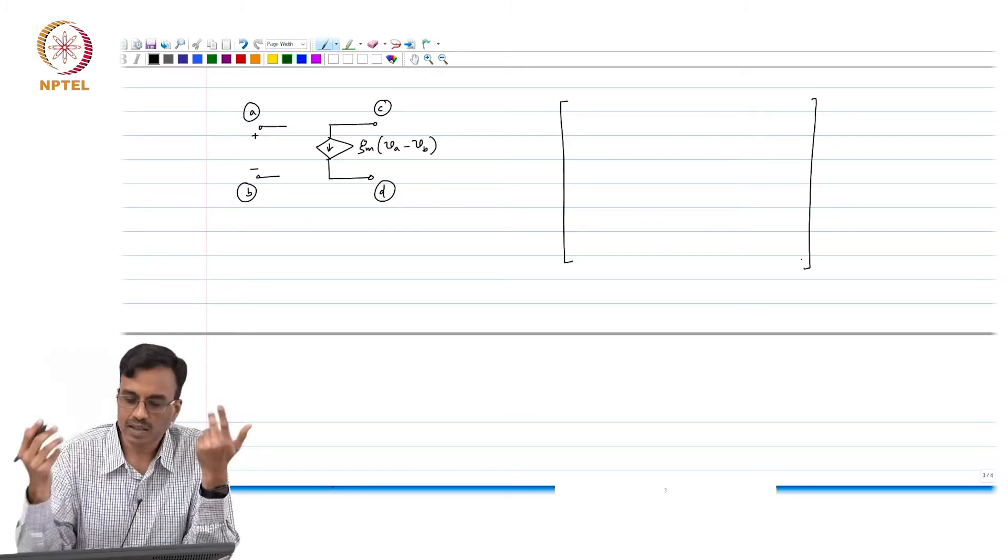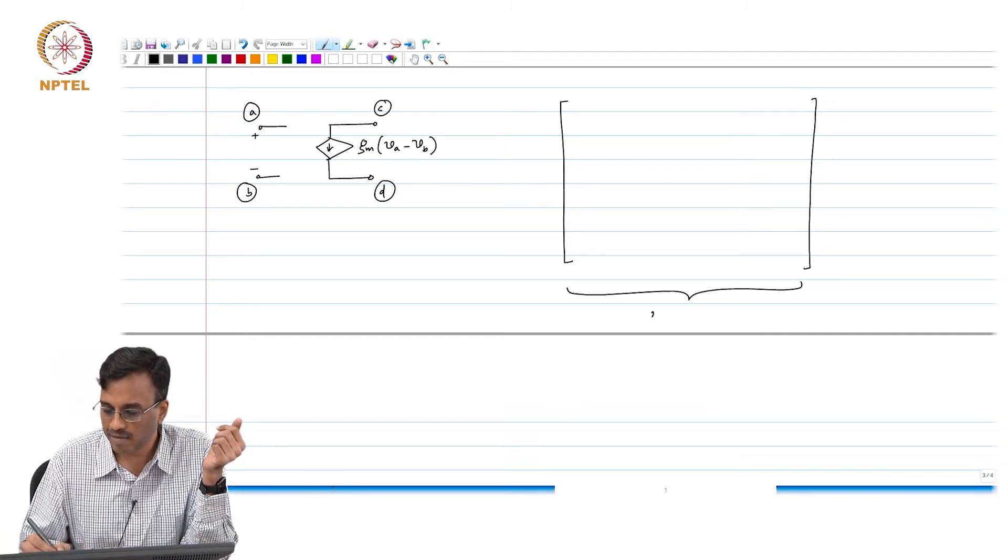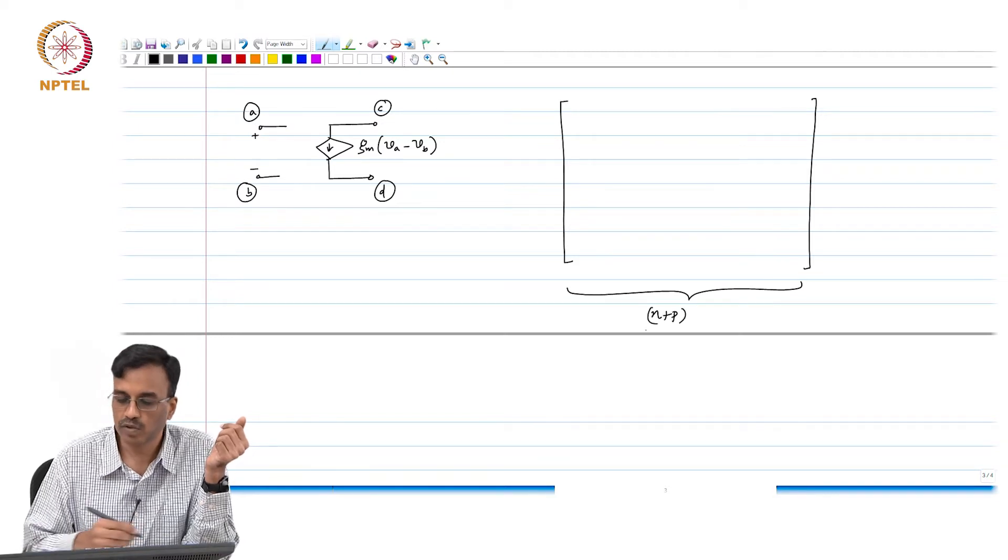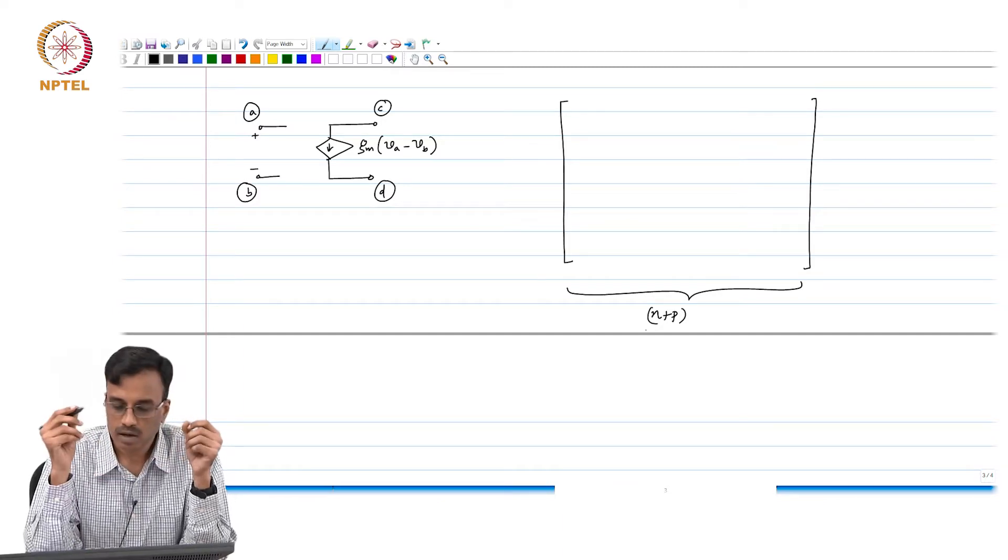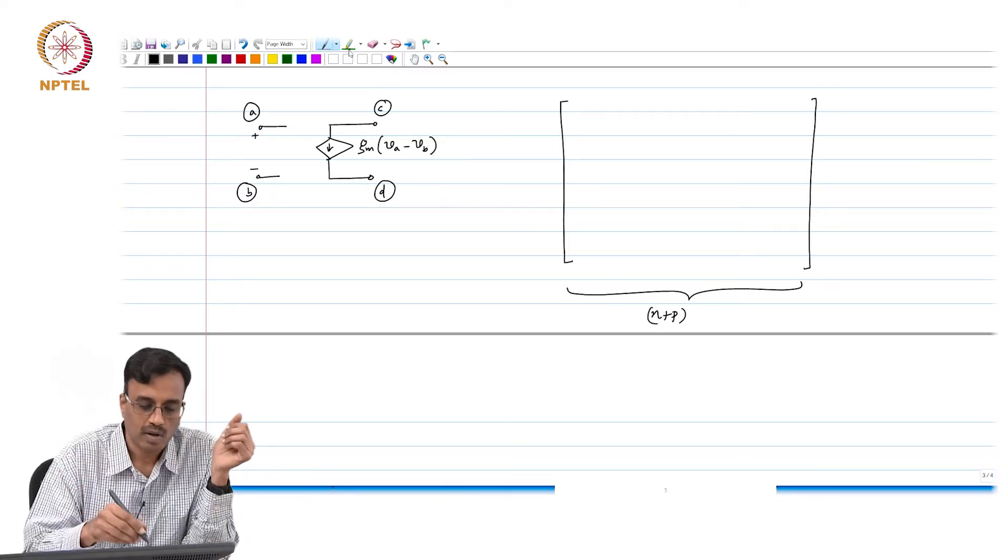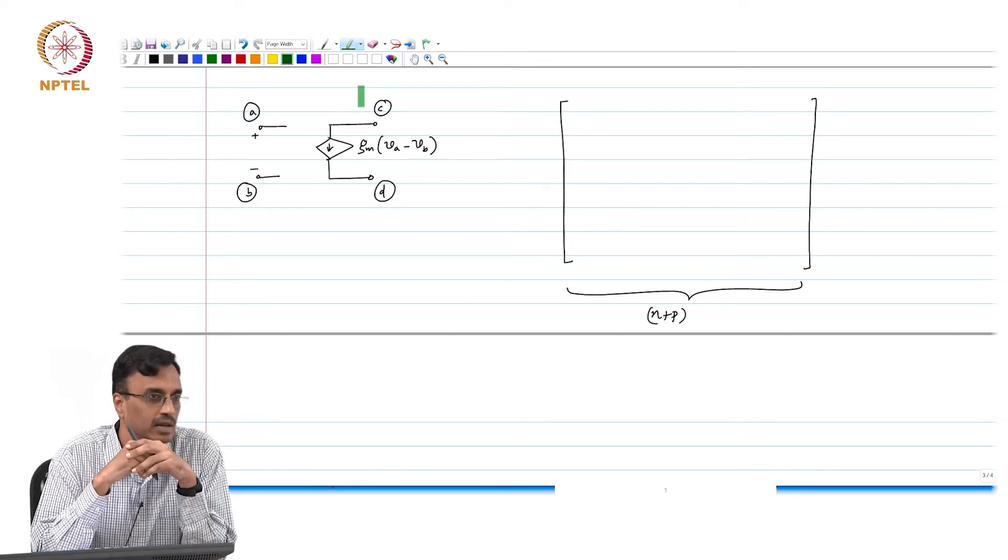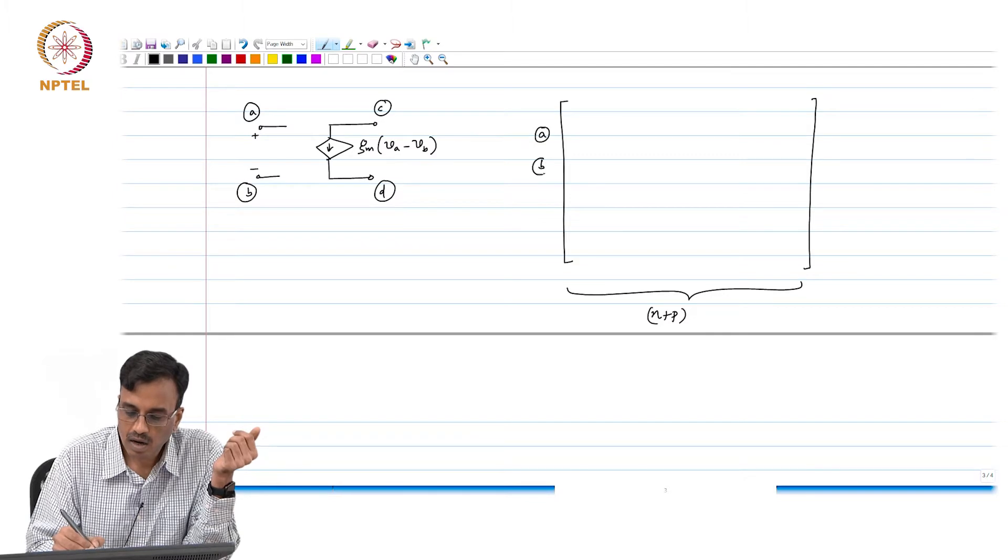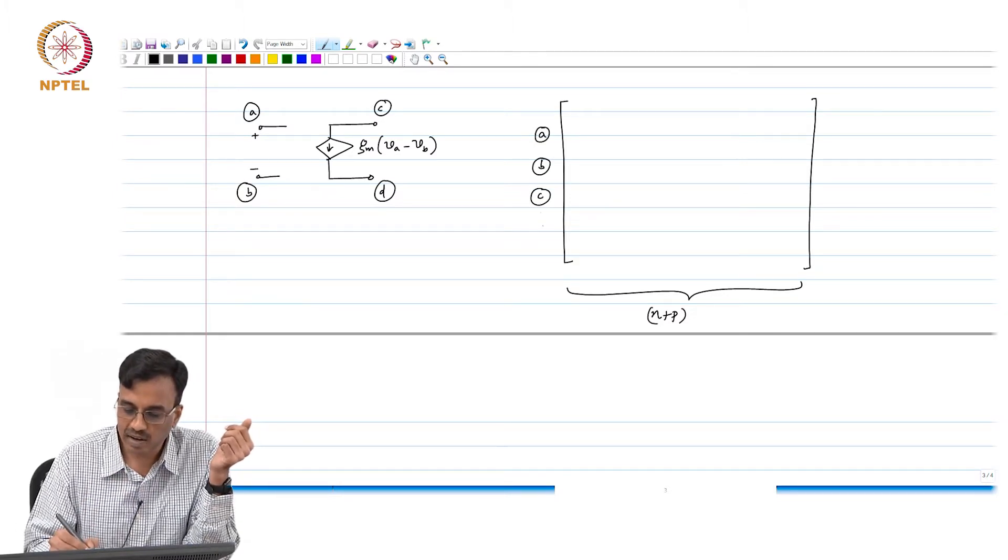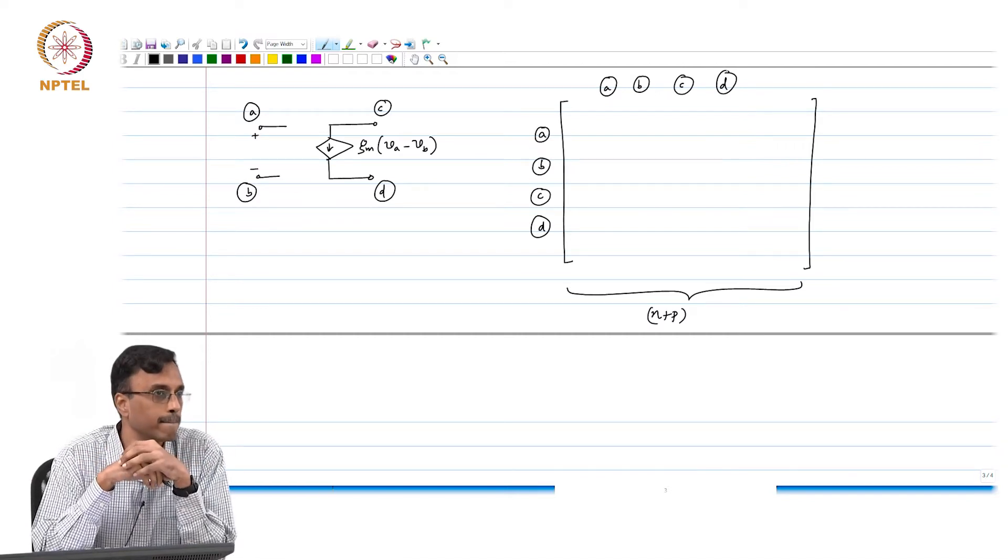In general, the augmented conductance matrix will be of this form - it will have n plus p rows and then n plus p columns. All the action will be basically between in which rows and which columns? In the rows corresponding to A, B, I mean if at all there is any action it will be in only in these rows and these columns.